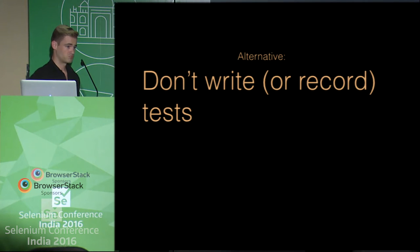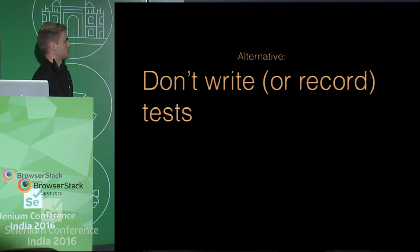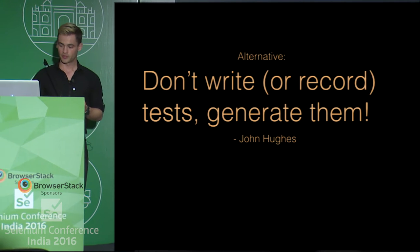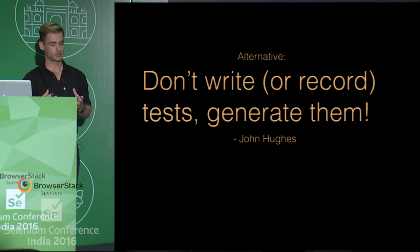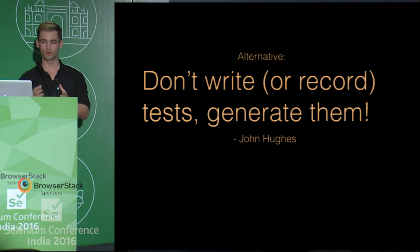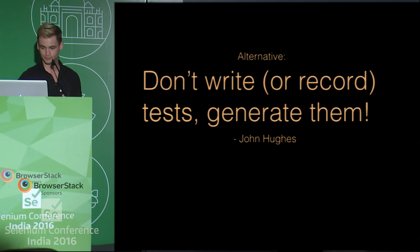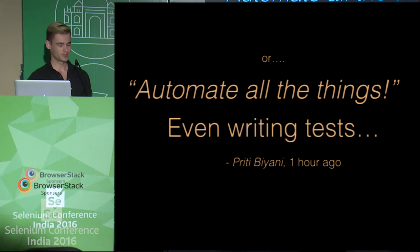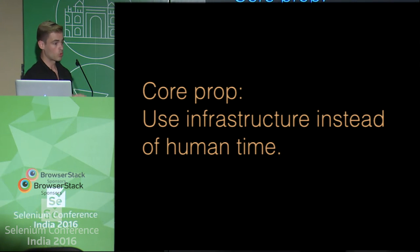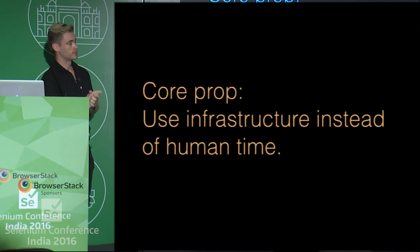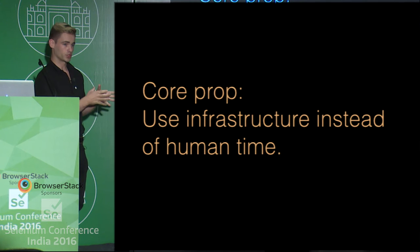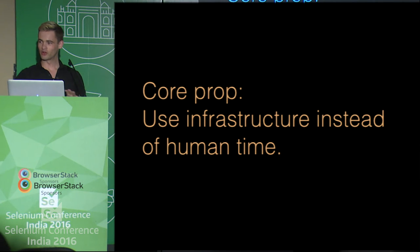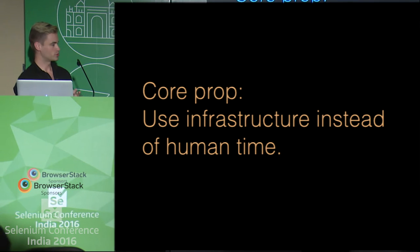So an alternative is just not to write or record tests — you should generate them. This is by John Hughes, creator of QuickCheck, which is a very famous generative testing and property-based testing library for both Haskell and Erlang. As we just heard in the last talk, we should automate all the things — even writing the tests. The core proposition here is that it is a much better idea to use infrastructure and computers rather than human time. Computers are really good at enumerating all the branches of possibilities, much better than human beings.